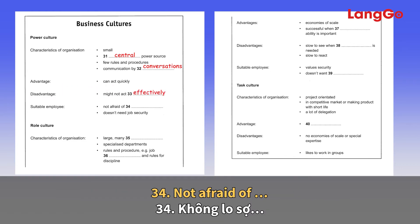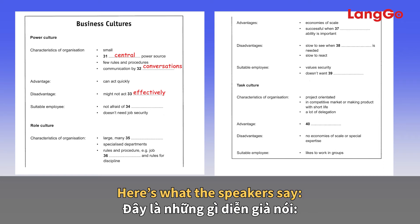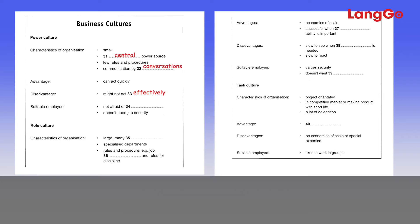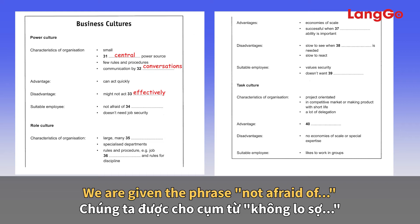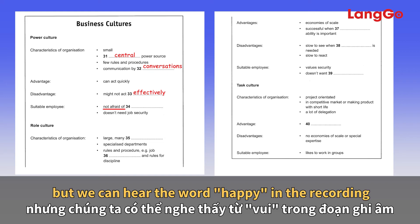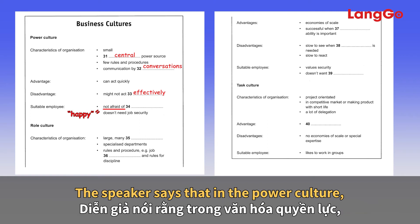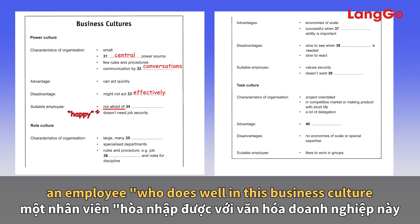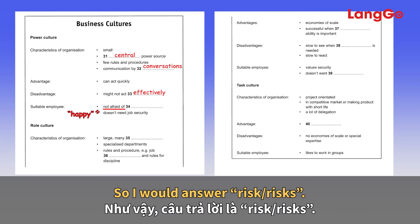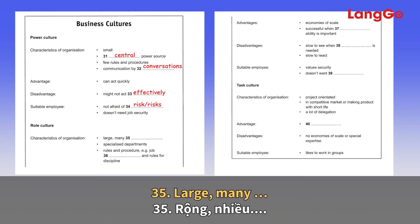Question 34 — not afraid of. The speaker says: the kind of person who does well in this type of business culture is one who is happy to take risks, and for whom job security is a low priority. The phrase 'not afraid of' matches 'happy to take' in meaning, so the answer is 'risks'.